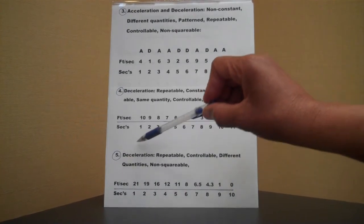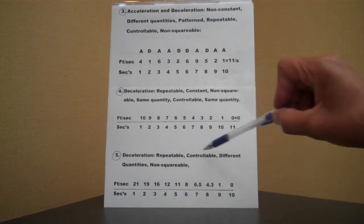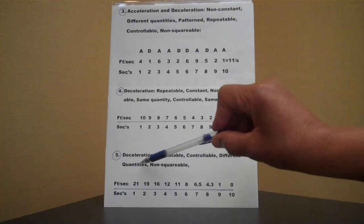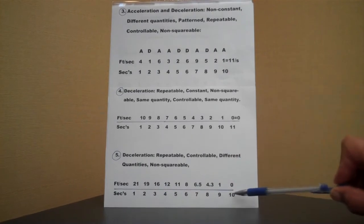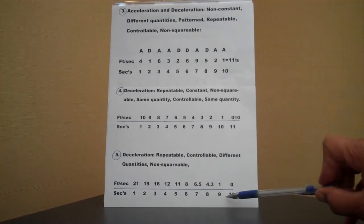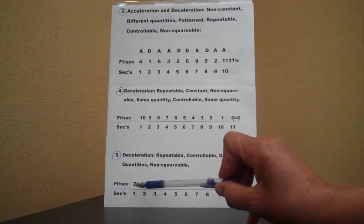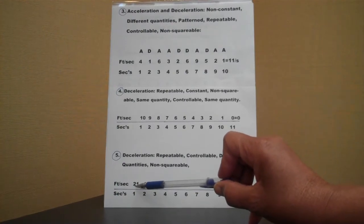We're going to go to number five, deceleration, repeatable, controllable, different quantities, non-squarable, feet per second, again, and seconds, ten seconds, over ten seconds, you started out with twenty-one feet per second.